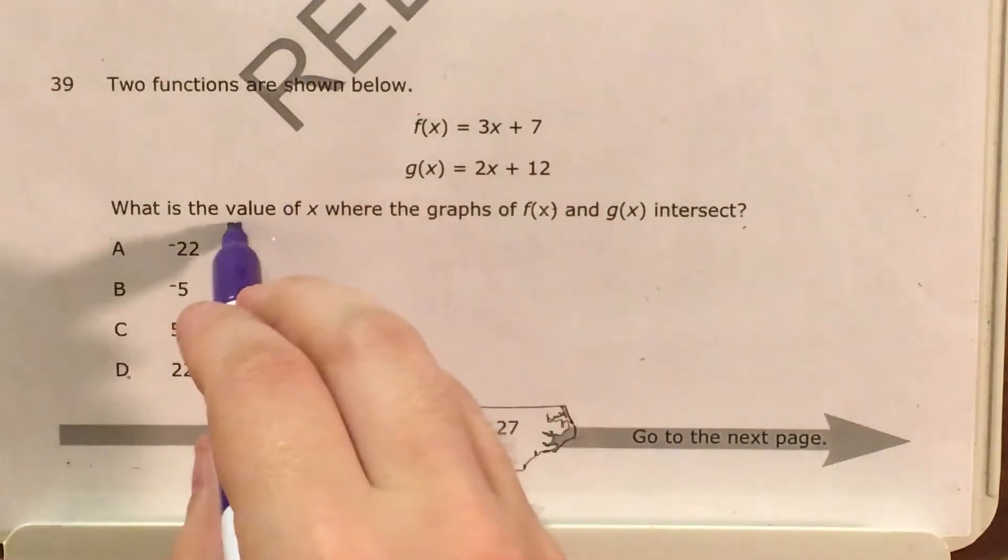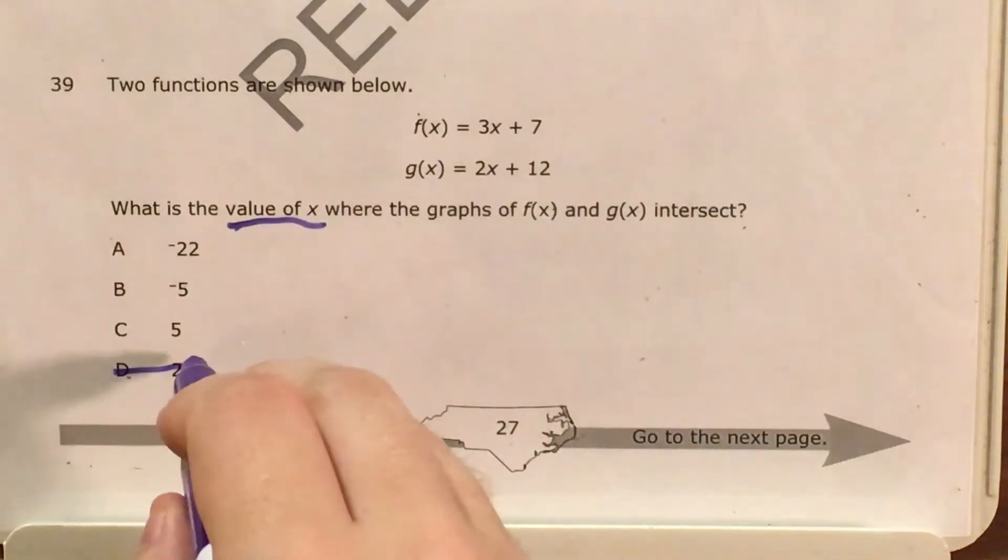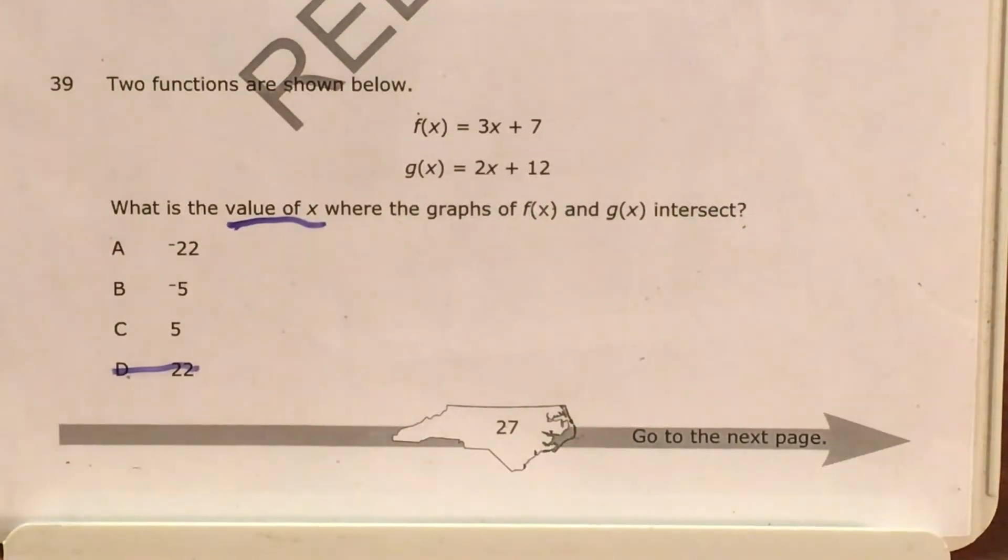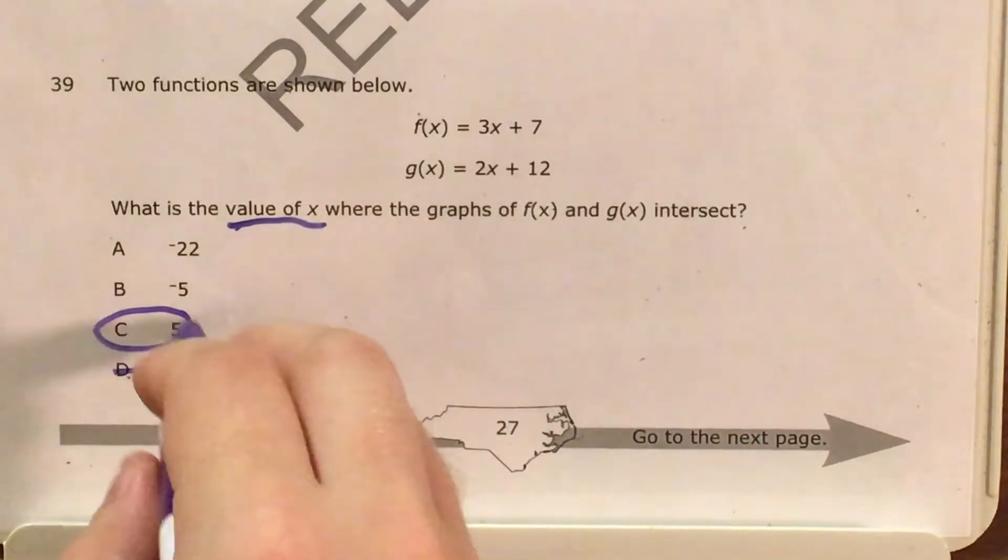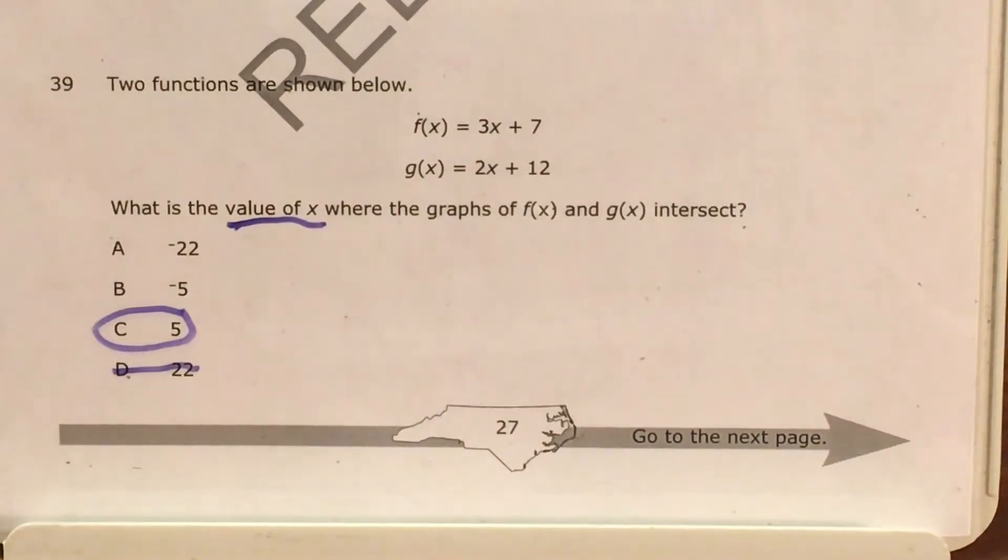Now the question was asking for the value of x. This is a trick answer. I don't want 22 because that's the y value. I want 5, the x value. So that's choice C right there.